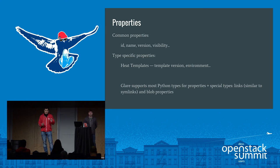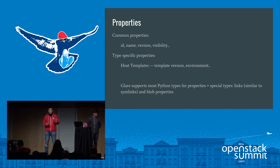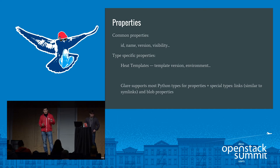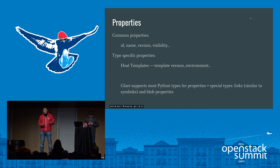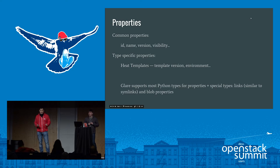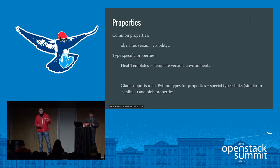Each property has its own metadata defined in Glare itself. We introduced metadata about properties such as name, default value, and type. We support most Python types as artifact properties, but also introduced two additional types that make a difference. The first type is link — it documents dependency between two artifacts, similar to symlinks in Linux; when you delete the referenced artifact, nothing happens. The second type is blob property, which is the key feature of Glare — it allows managing binary data using Glare artifacts.